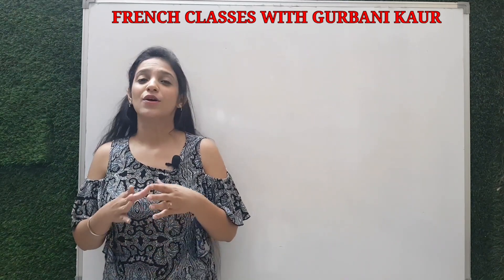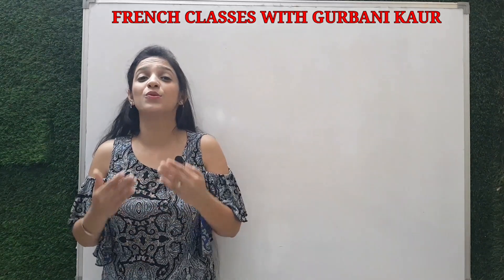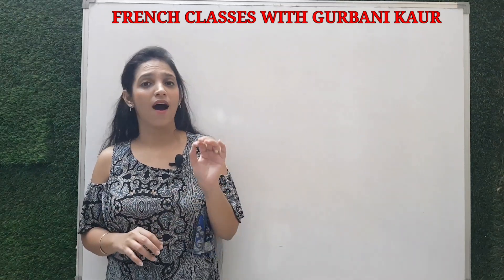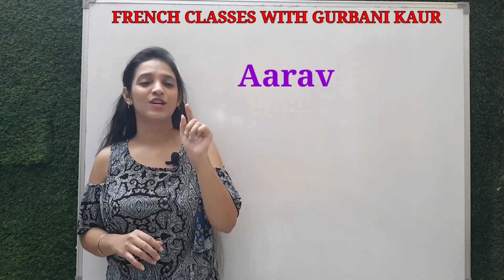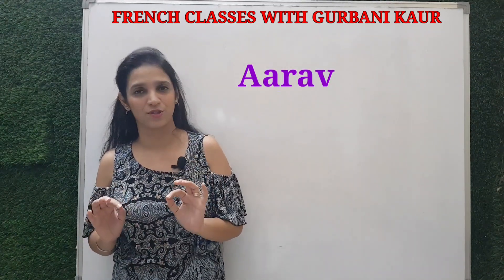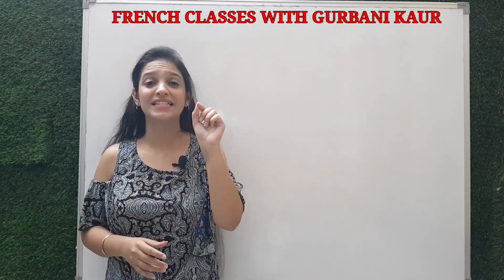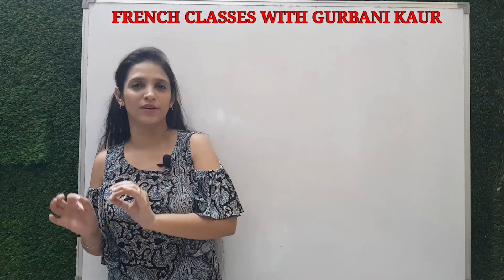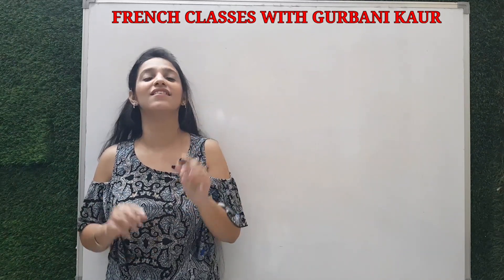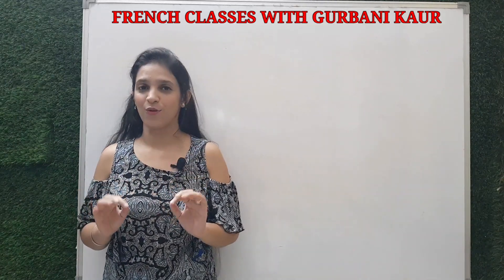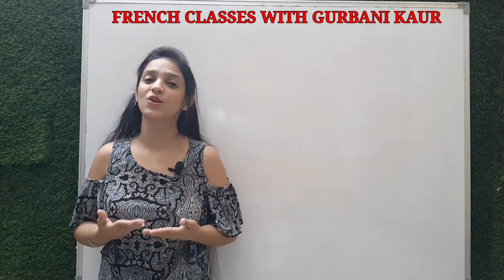First you need to know what are subject pronouns in English. A subject is the person or thing who is doing the action. For example, Arav is sleeping — who is doing the action? Arav. So Arav is the subject. When we replace that noun with a word like 'he is sleeping,' here 'he' is the subject pronoun. He, she, I, they, you, we — these are all called subject pronouns.